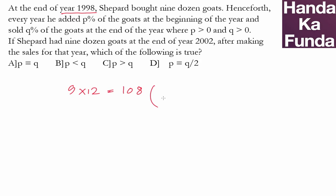So that means every year it went up by P percent or it got multiplied with one plus P by 100 and then it got reduced by Q percent or it got multiplied with one minus Q by 100 where both of these are positive values.